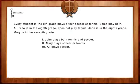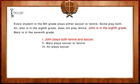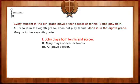The first step to solve this question is to identify our list of conditions. We are told that every student in the 8th grade plays either soccer or tennis, and some play both. When we review our first Roman numeral, it states that John plays both tennis and soccer. Since John is in the 8th grade, he must play either soccer or tennis, but he does not have to play both. Hence, we can eliminate Roman numeral 1, since it is not absolutely true.